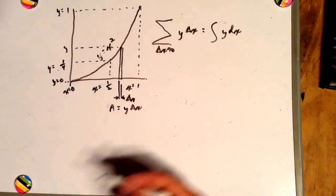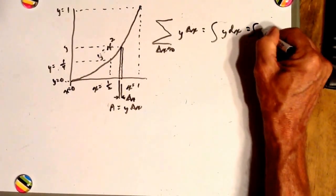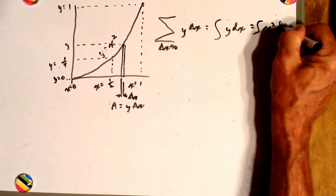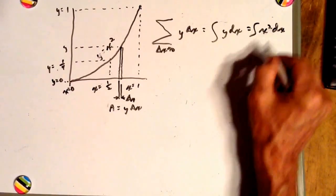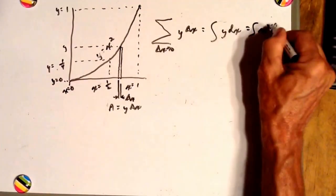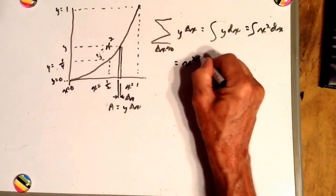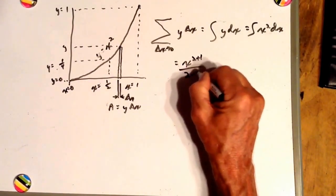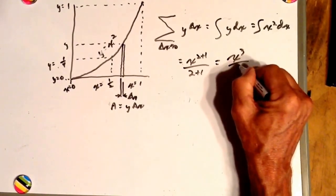But in this case, y is equal to x squared. So the integral of y dx is going to equal the integral of x squared dx. So what's the integral of x squared dx? Well, x to the 2 plus 1 over 2 plus 1, which is x cubed over 3.